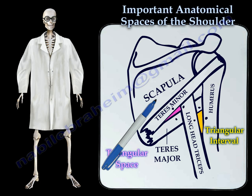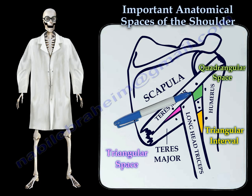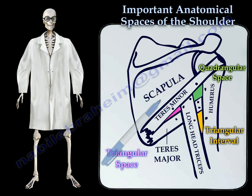And finally, the quadrangular space has boundaries which include the teres major, the humeral shaft, the teres minor, and the long head of the triceps.